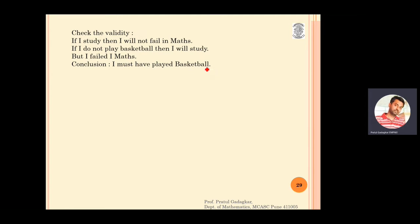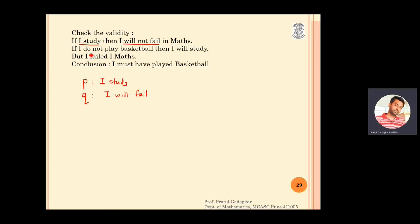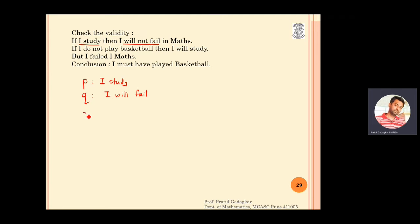To solve this, I will assign variables to the sentences. Let p represent 'I study,' let q represent 'I will fail in maths,' and let r represent 'I play basketball.' So 'I do not play basketball' will be represented as negation r.